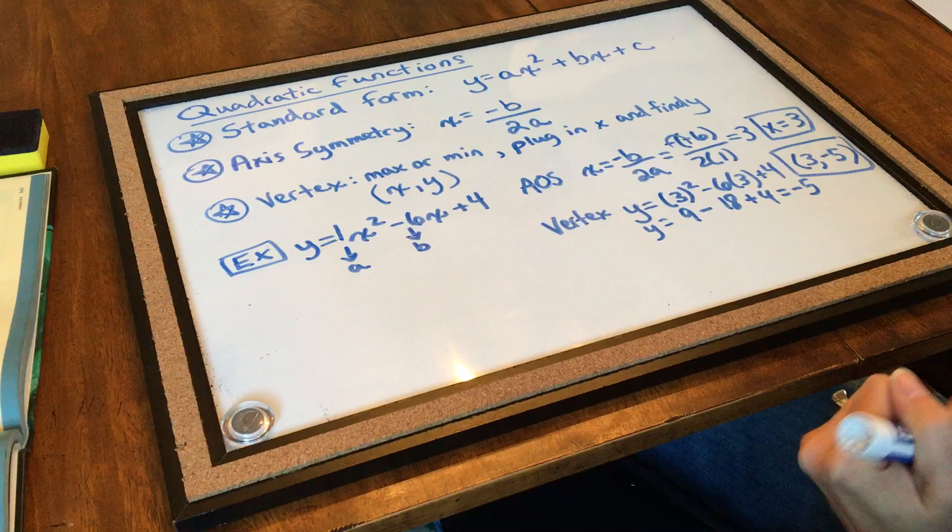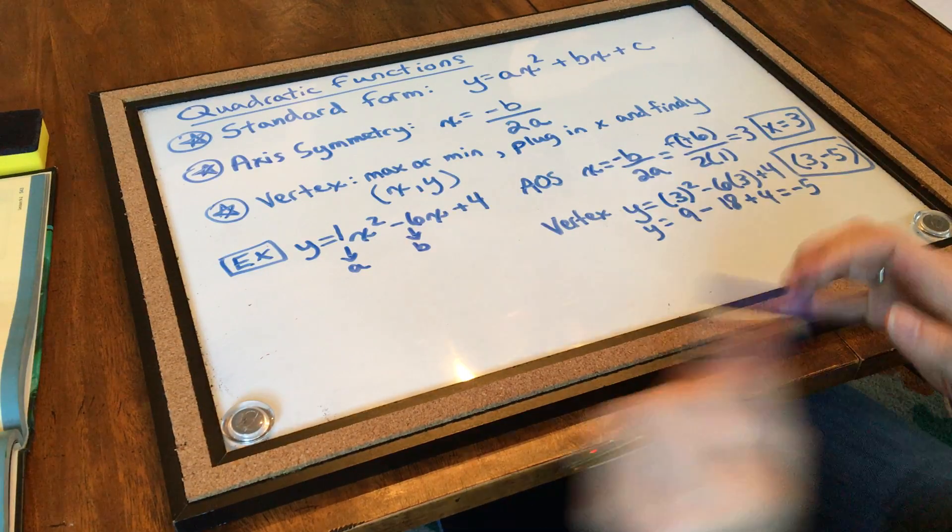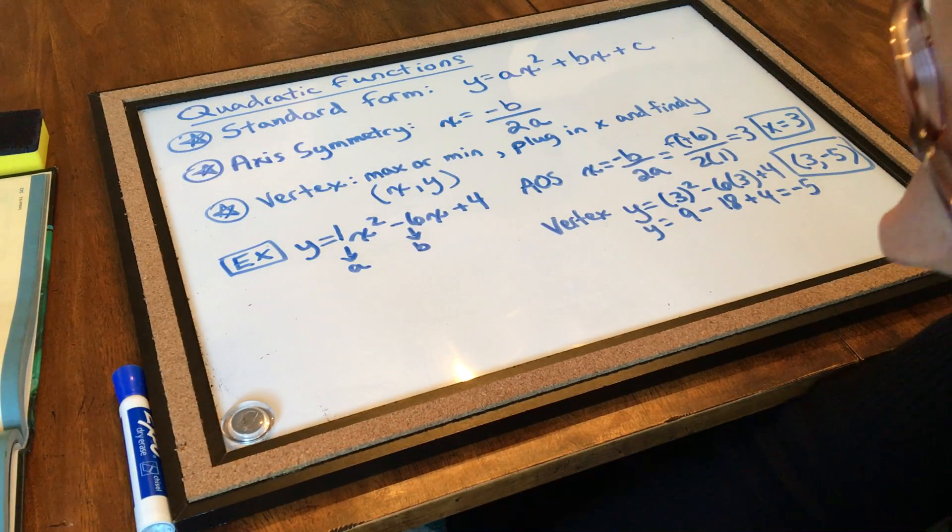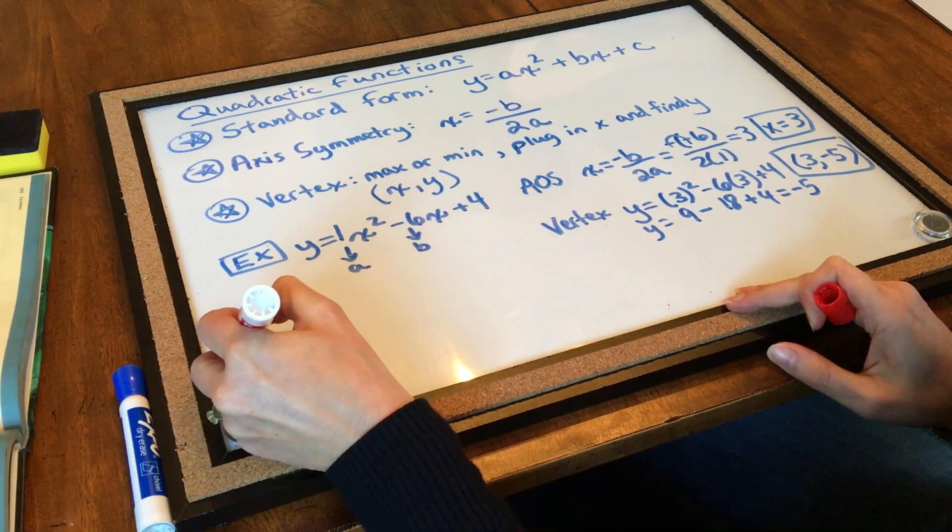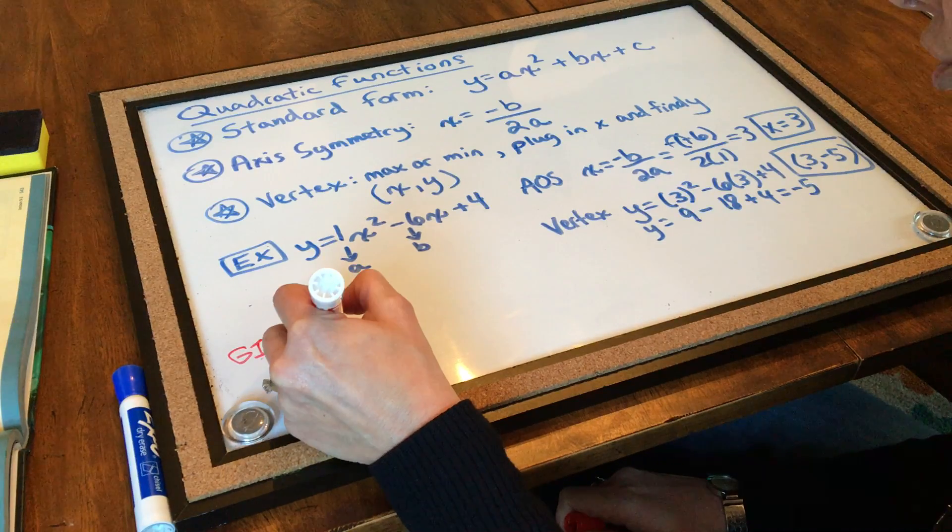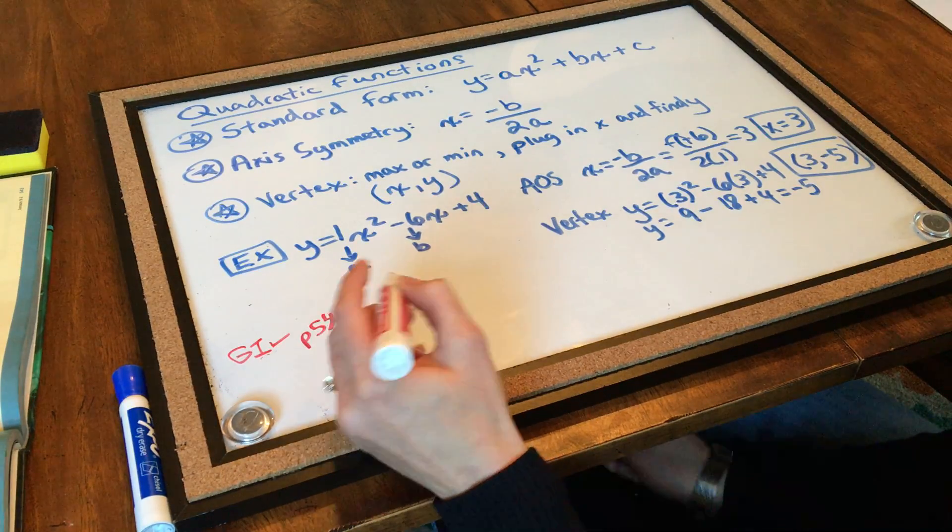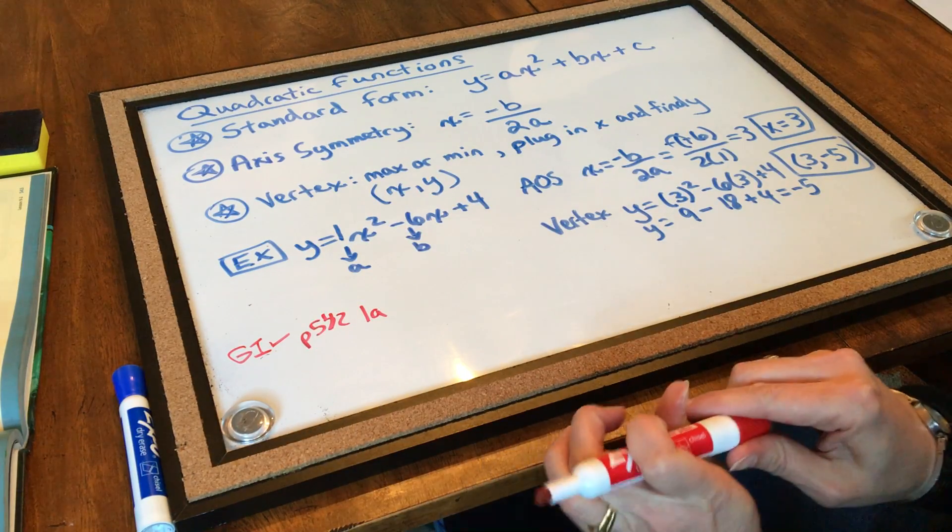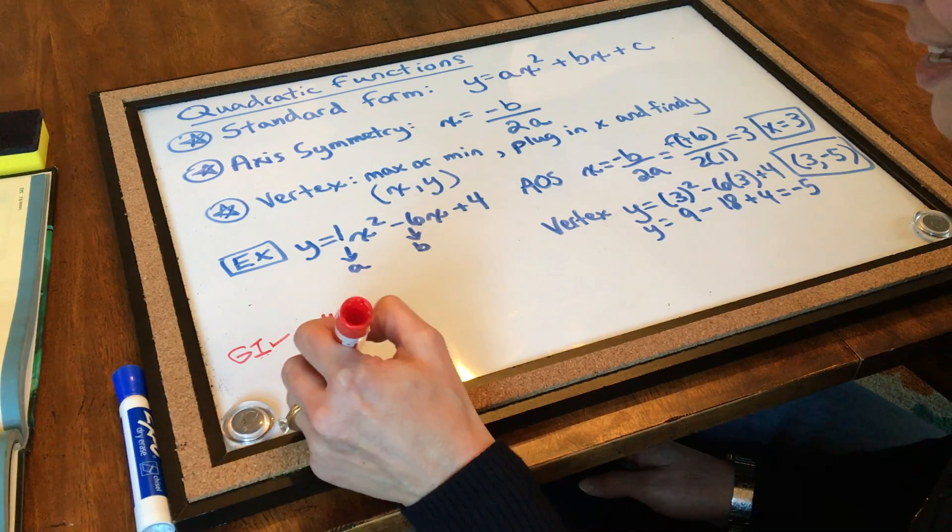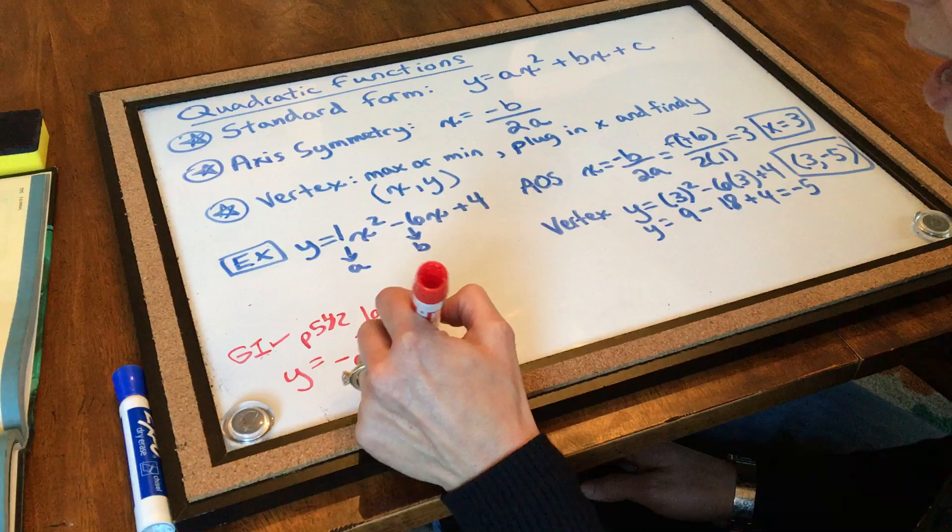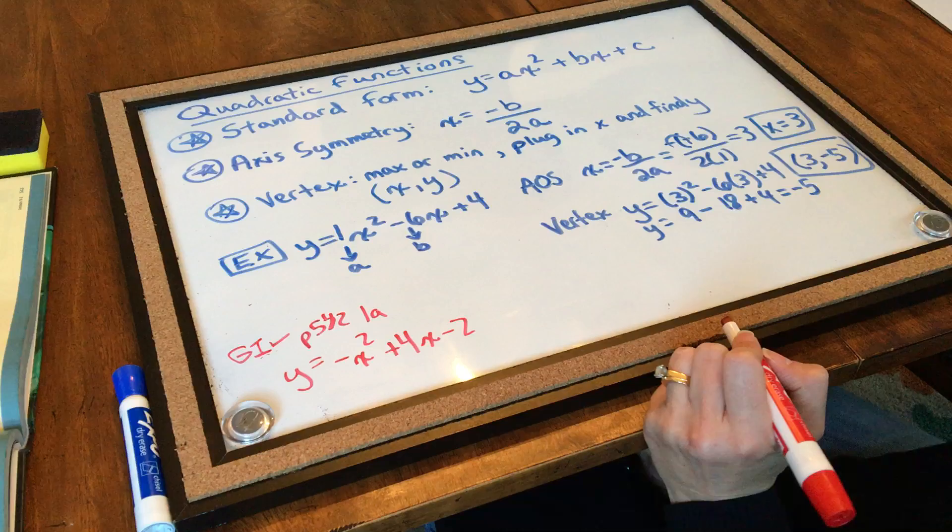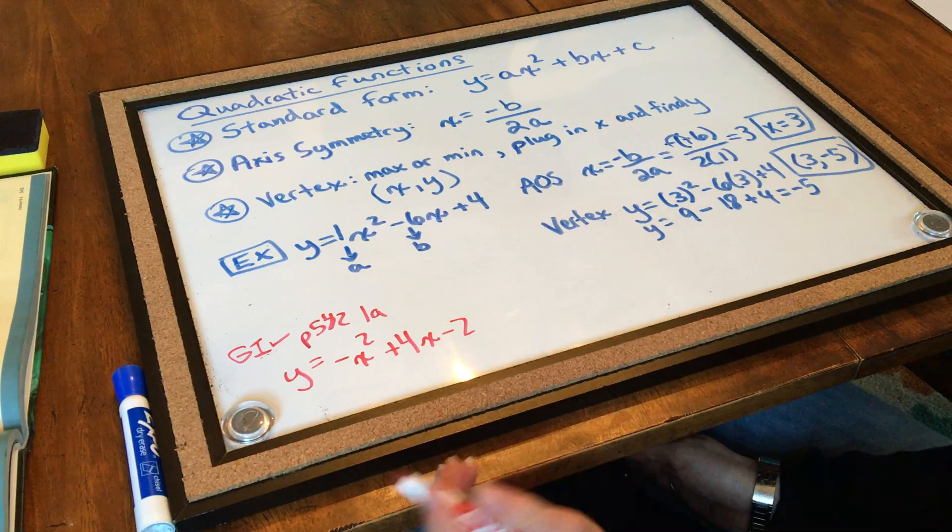All right. Let's try our gotta check. And, I have misplaced my red marker here. I think I'm going to find it. I think it's down on the bottom. I always do my gotta checks in my red marker. Your gotta check is on page 542. And, we are doing gotta check number 1a. Remember, just the axis of symmetry and the vertex. So, my equation is y equals negative x squared this time, plus 4x minus 2. Pause the video. Come back when you're ready.